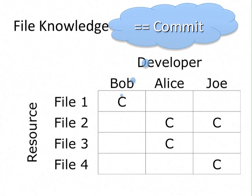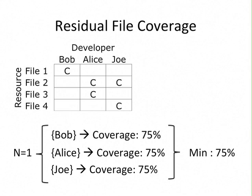We have to compute the residual file coverage — that is, what percentage of files are still known by the remaining developers when one or more developers are hit by a truck. We can compute this residual file coverage using a matrix. If we assume one developer has been hit by a truck, we can compute the worst case by checking the residual coverage if Bob, Alice, or Joe is hit — that is, removing the first, second, or third column. In each case, the residual file coverage is 75%.